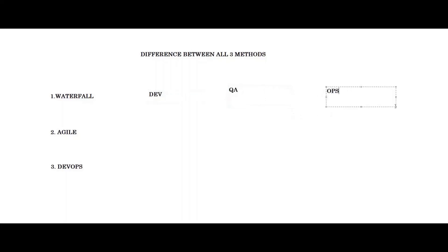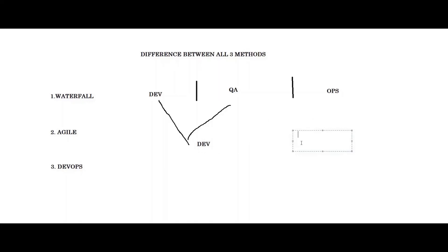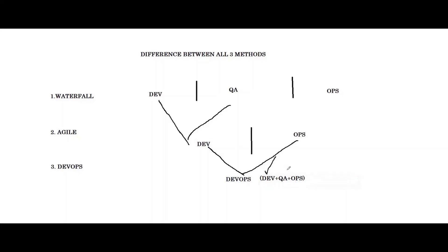Now let's see the difference between all three methodologies. In waterfall methodology, there were three different teams — development, quality assurance, and operations — and all three were working in isolation, meaning no one understood the challenges faced by others, which led to a blaming game. In agile methodology, development and testing happened in parallel, so the QA and development teams were brought together. But the operations team was still working in isolation. Then DevOps came, which brought the development and operations teams together. DevOps includes all three teams: the development team, quality assurance team, and the operations team.